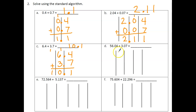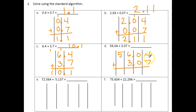Problem D: 56 and 04 hundredths plus 3 ones and 7 hundredths. Place the 3 under the 6 in the ones column — place value units must line up. Seven hundredths plus 4 hundredths is 11 hundredths; rename 10 hundredths as 1 tenth. Then 6 ones plus 3 ones is 9 ones, plus 5 tens. Our answer is 59 and 11 hundredths.